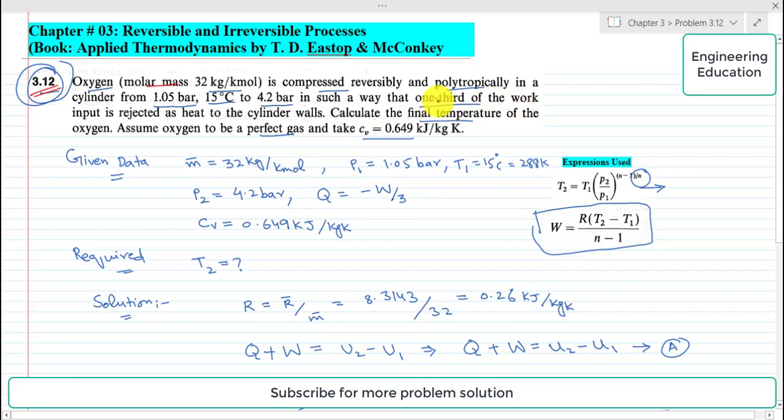Calculate the final temperature of the oxygen. Assume oxygen to be a perfect gas and take Cv is equal to 0.649 kilojoules per kilogram per Kelvin.